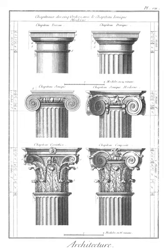Geison: Greek, often interchangeable with cornice — the part of the entablature that projects outward from the top of the frieze in the Doric order and from the top of the frieze course of the Ionic and Corinthian orders; it forms the outer edge of the roof on the sides of a structure with a sloped roof.